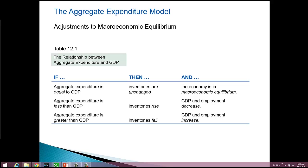The second row says that aggregate expenditure is less than GDP. When aggregate expenditure is less than GDP, planned inventories are less than actual inventories. Inventories rise because actual inventories are greater than planned inventories. When that happens, GDP decreases and employment decreases.